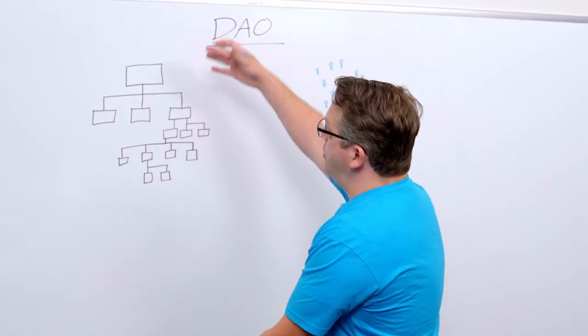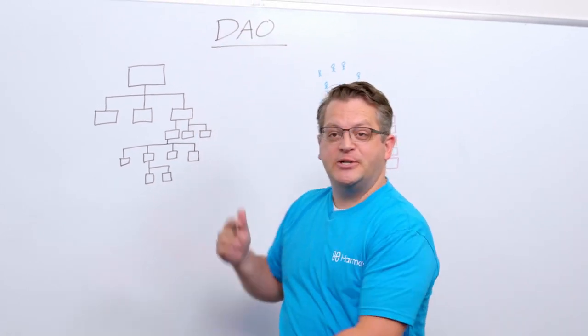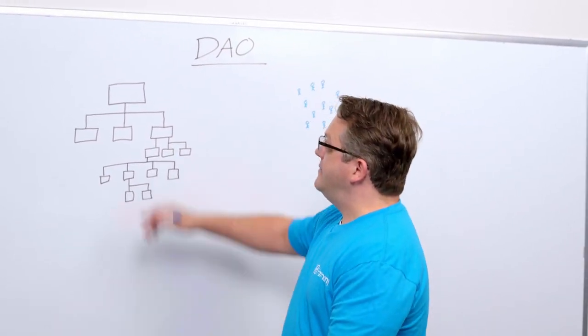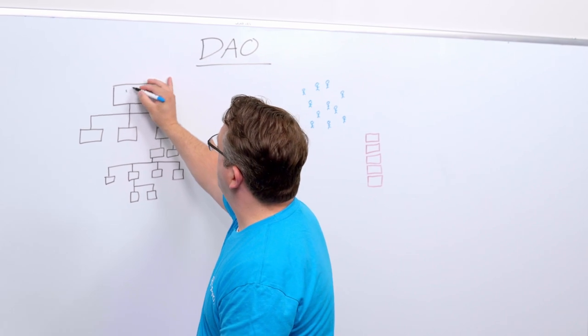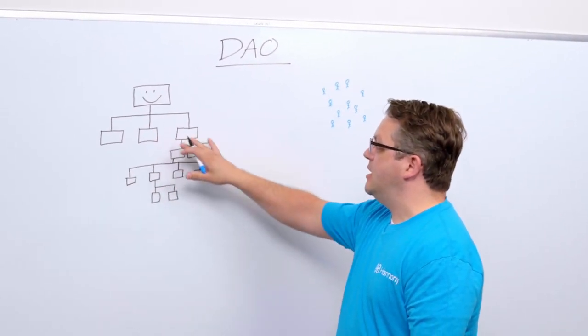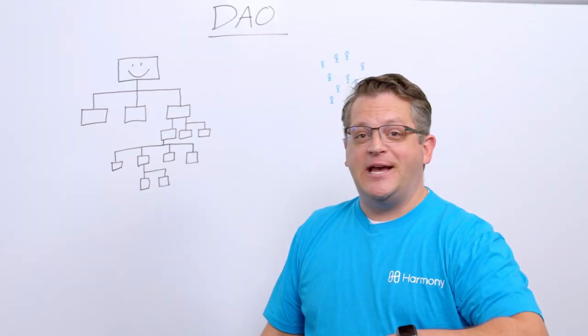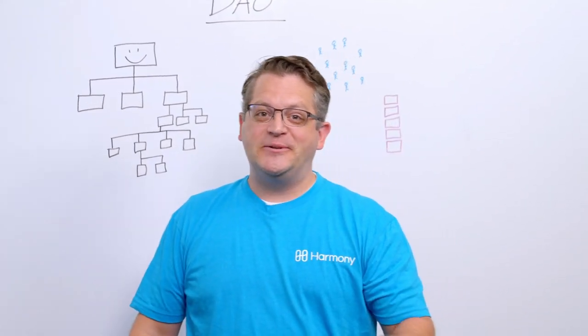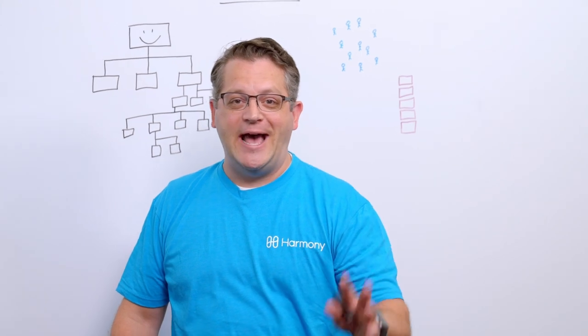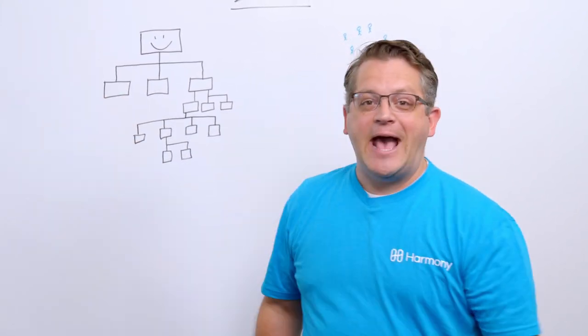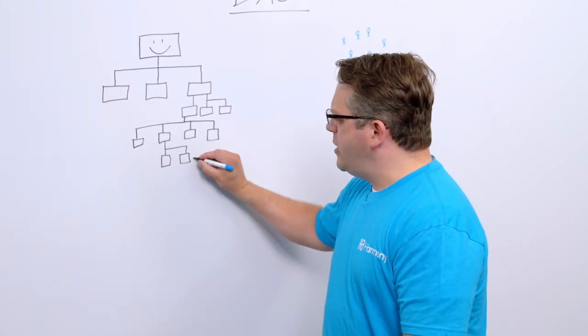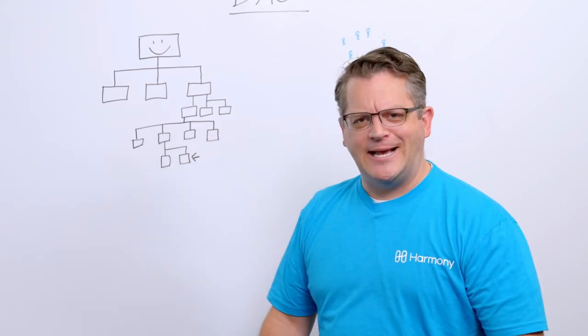So I drew up a little org chart from a traditional organization where we have a CEO up top, Mr. Happy CEO, right? And we have all of his VPs and all of his various different minions. And as anybody who's ever worked at a fast food joint or anybody who's ever folded clothes at a Gap or whatever, you realize that the real work is done by these guys down here.